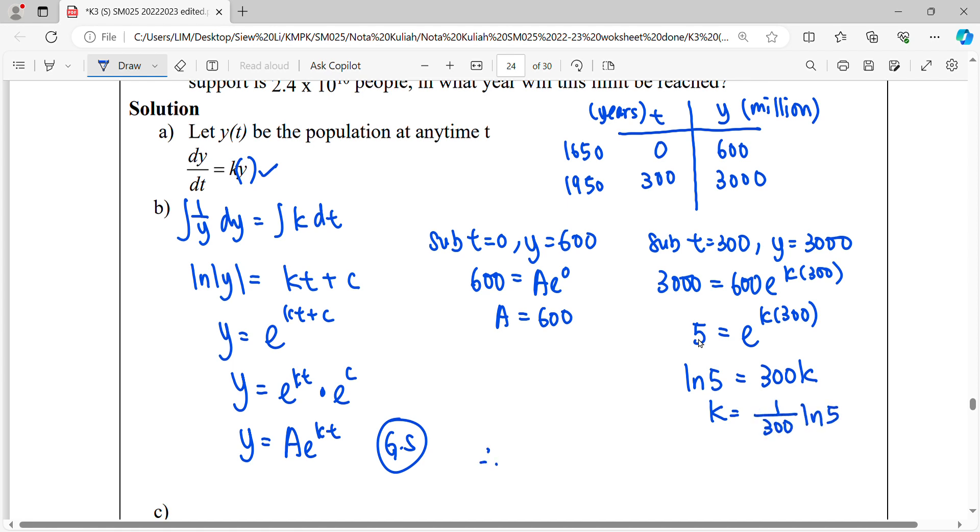Therefore, we substitute into the general solution here, where A is 600, e, and k constant here is 1 over 300 ln 5 times t. This is our particular solution.